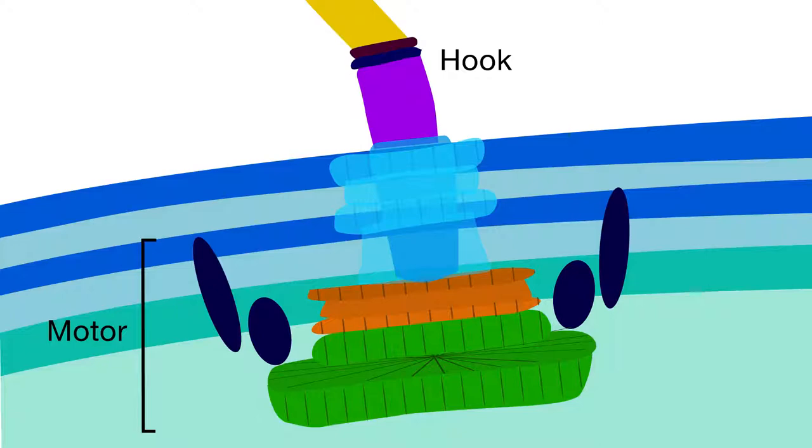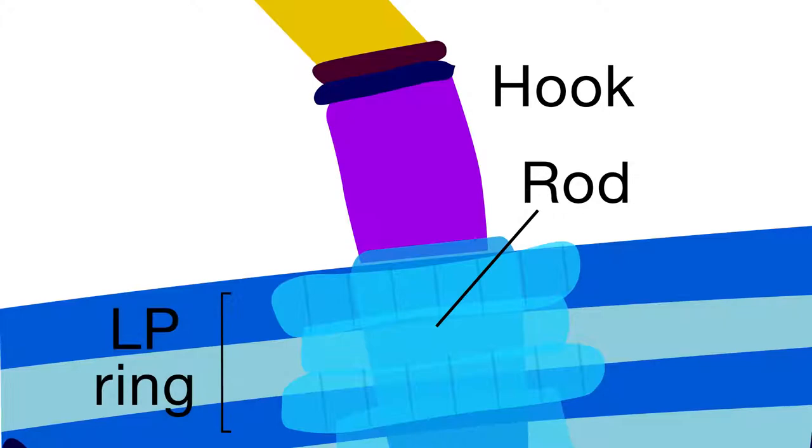Scientists know a lot about how these machines work, but there are still important questions, like how hook proteins function. Now, researchers at the Okinawa Institute of Science and Technology and their collaborators have identified a surprisingly important role for a disordered segment of the hook protein.